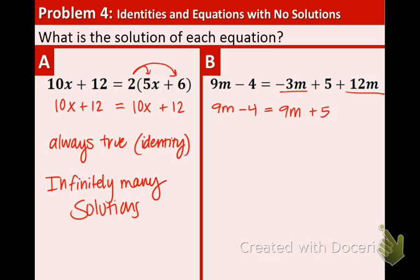I see like terms on both sides. So in order to get rid of the 9m, we're going to subtract 9m from both sides. Now they cross out. Oh look, the variables are gone. Now we have negative 4 equals positive 5. Is that a true statement?